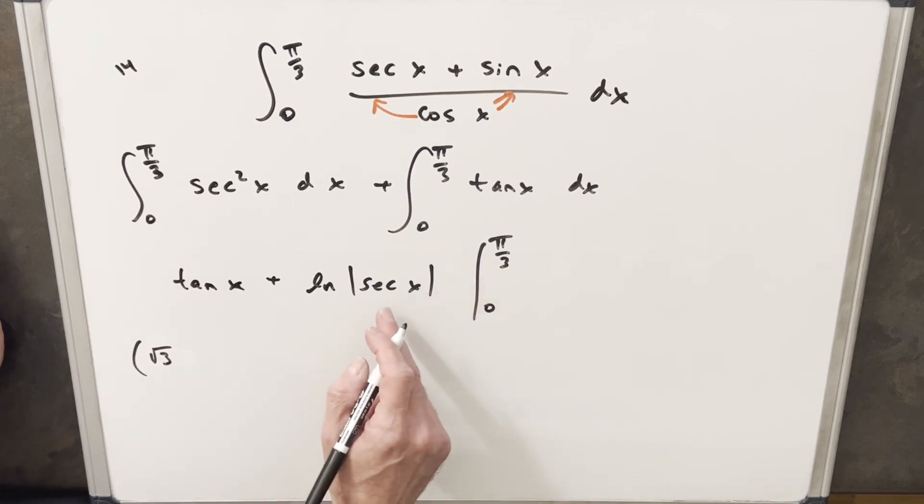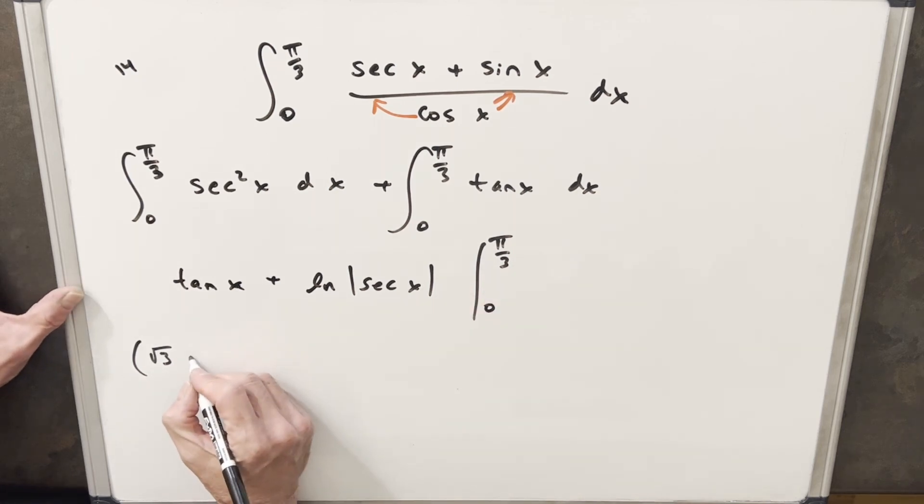Then plugging in pi over 3, secant of pi over 3, I like to look at it as the reciprocal of cosine. Cosine of pi over 3 is 1 half. The reciprocal is going to give me 2. So this is going to actually be natural log of 2.